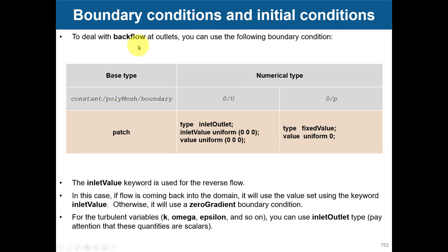For backflow outlets, this is how you do the treatment: you can use zero gradient with no problem, but the proper approach is to set it as a patch in boundary and then use the type inletOutlet. You provide an inletValue — this is the value that is used if flow is coming back. Basically you always block the flow if it is coming back into the domain. Or you can give another value, like a velocity of (10 0 0), to push the flow away. This is the standard treatment.